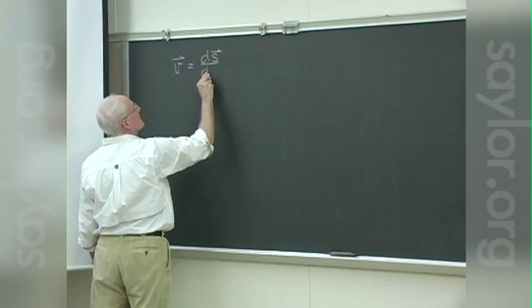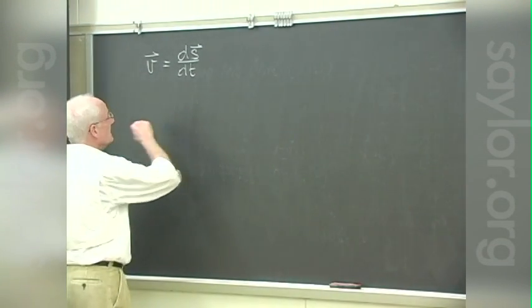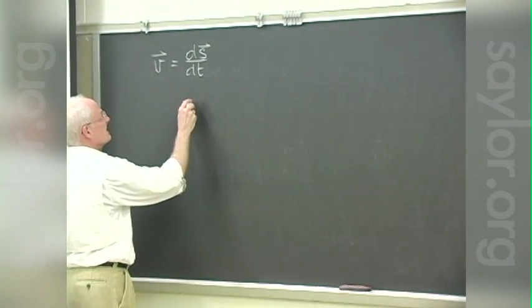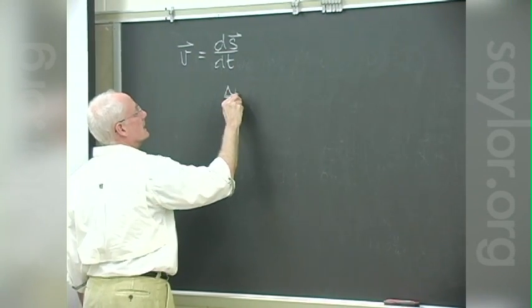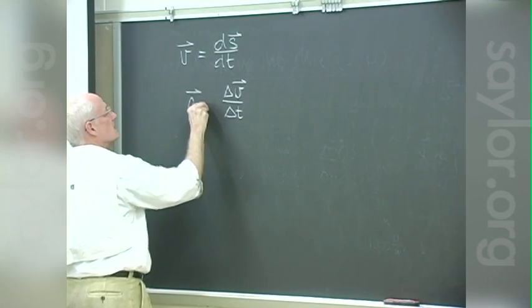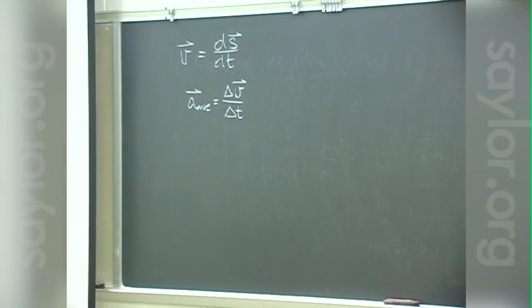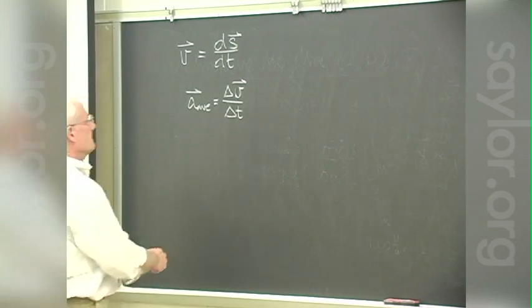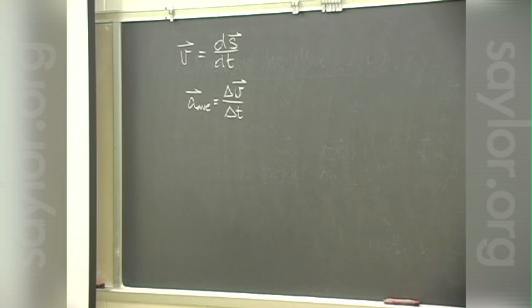For statics that velocity was constant; for dynamics it's going to be quite variable. As we look at how velocity varies with time, we come up with acceleration. The average acceleration between two distinct time periods is how the velocity changes — this is a lot less intuitive than velocity.